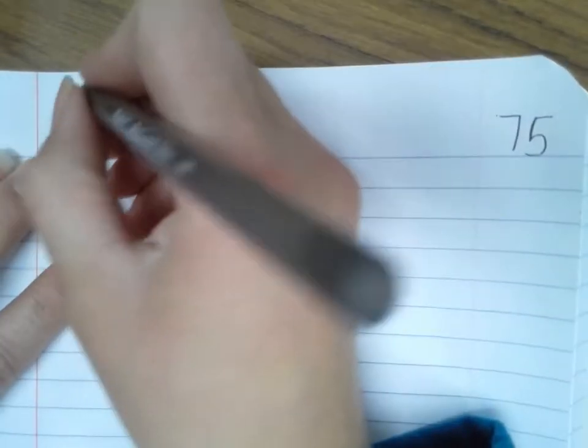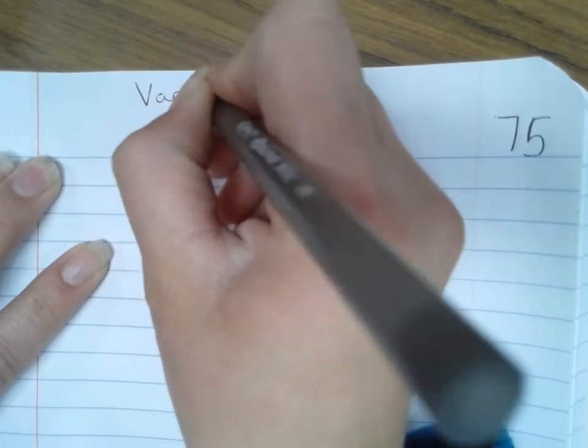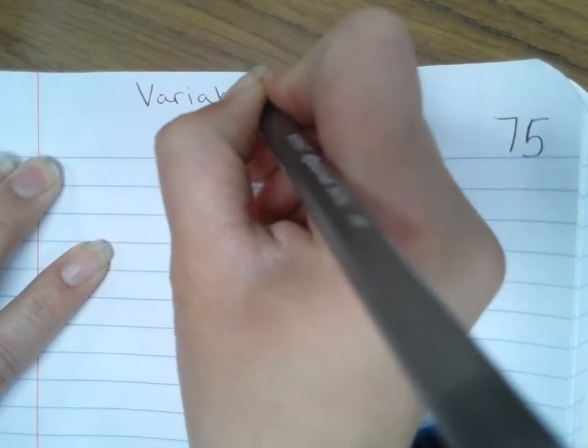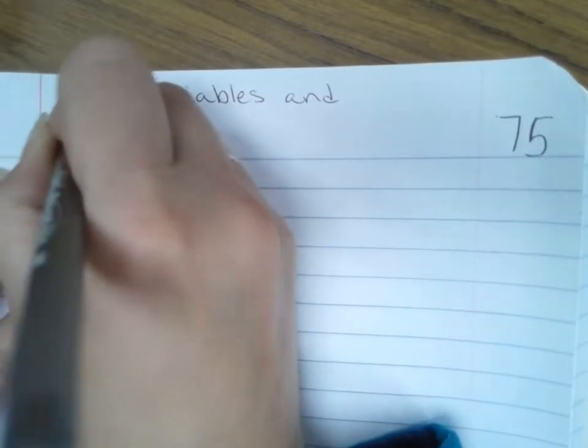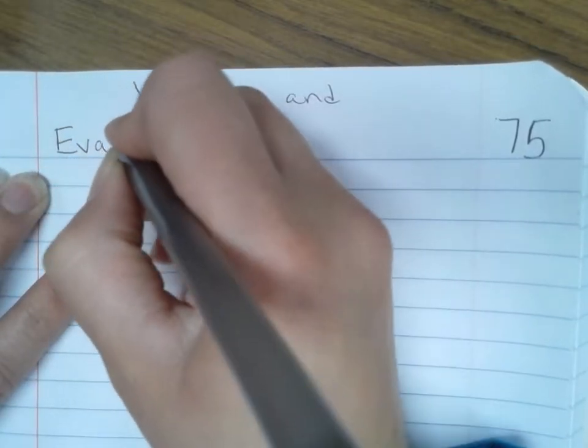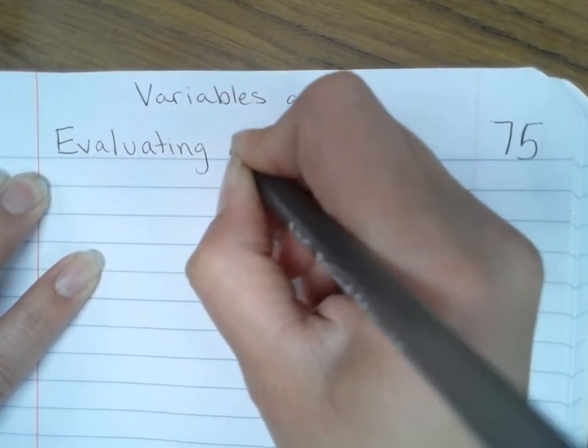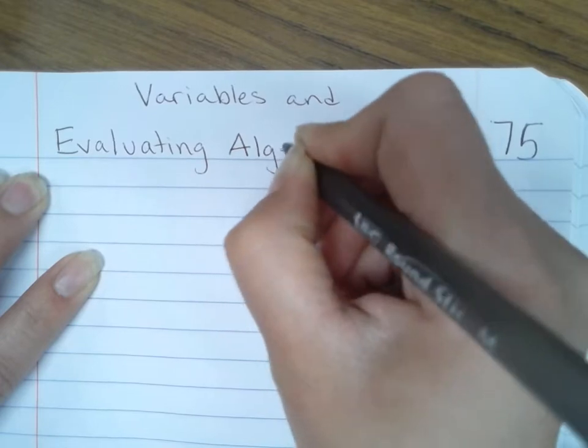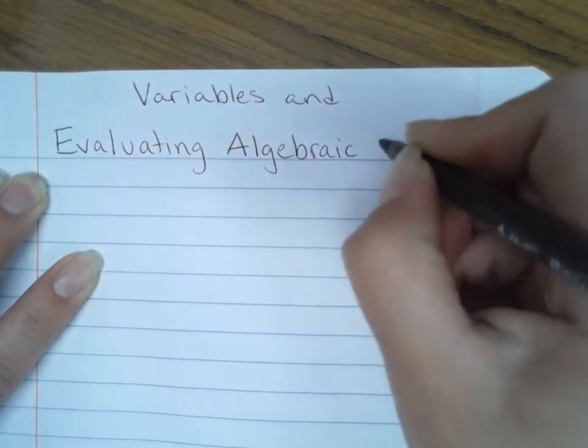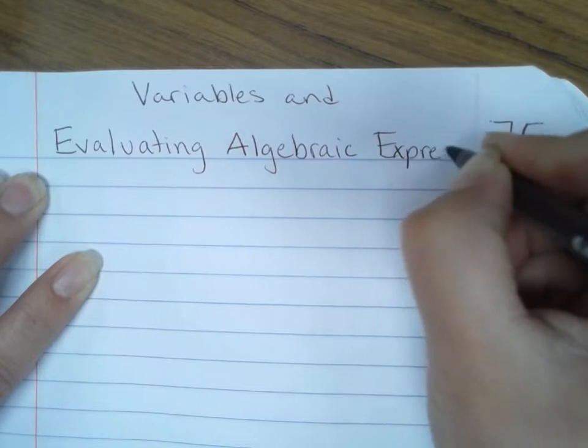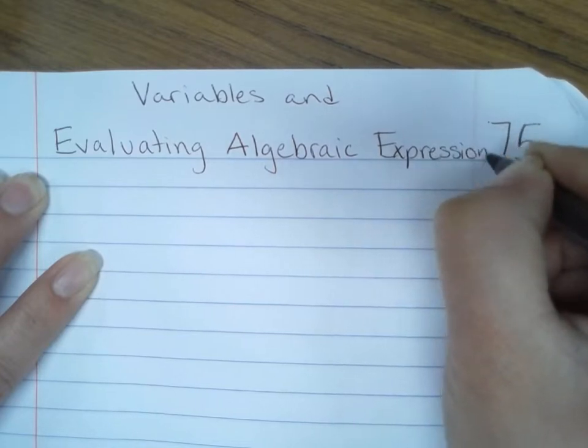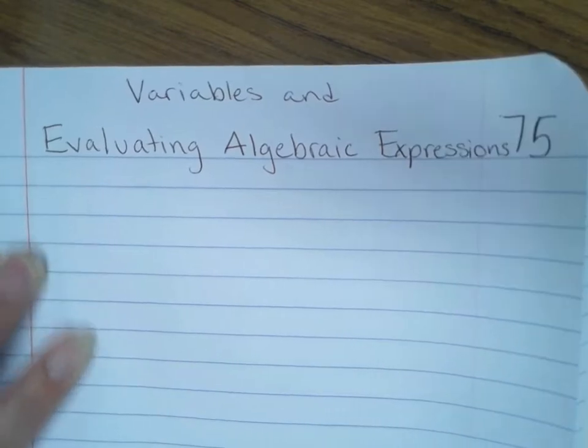This is page 75 of your math journal. We're going to call this one Variables and Evaluating Algebraic Expressions.